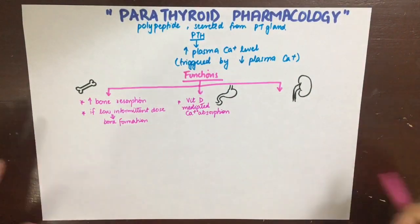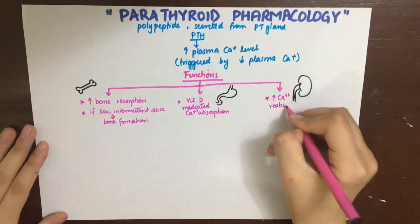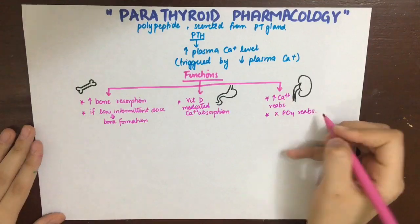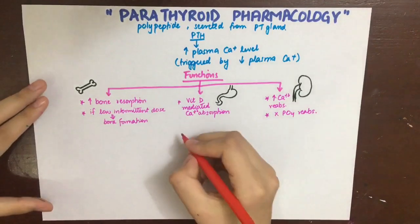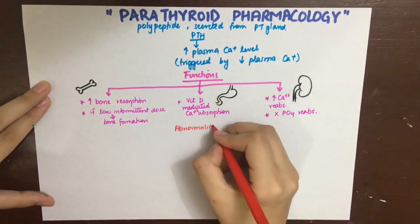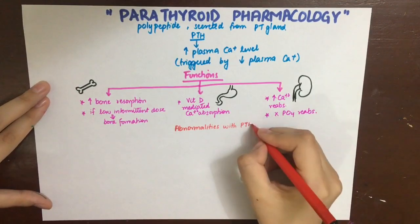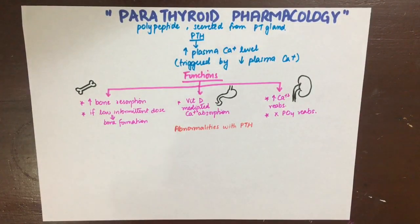In the kidneys, parathyroid hormone causes increased calcium reabsorption and inhibits phosphate reabsorption. It also regulates the 1-alpha hydroxylation of vitamin D3, converting it into its active form.